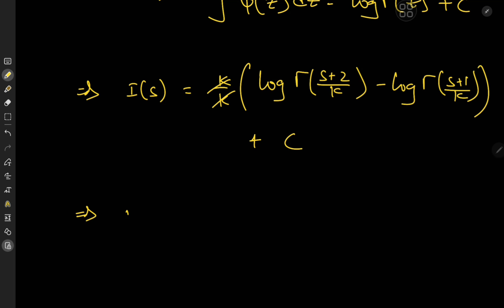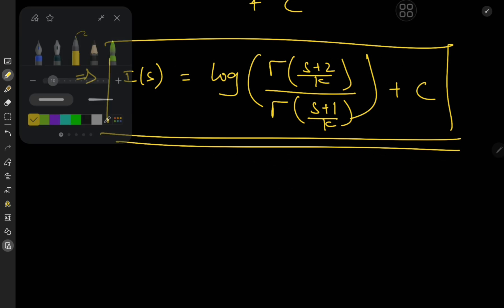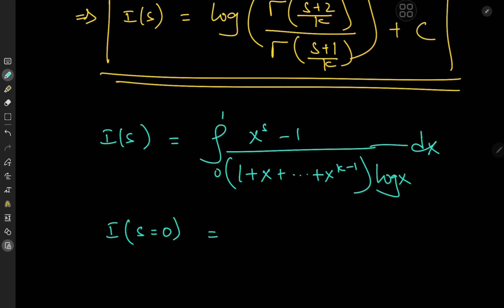Using the properties of the logarithm, we can write this as I of s equals the logarithm of gamma s plus 2 by k divided by gamma s plus 1 by k plus a constant of integration C. And now we need to figure out exactly what this constant is. For that, let's recall the integral function. If we plug in s equal to 0, we have 1 minus 1 in the numerator, so the entire thing would collapse to 0. Applying Feynman's trick basically amounts to solving a differential equation given some initial conditions.